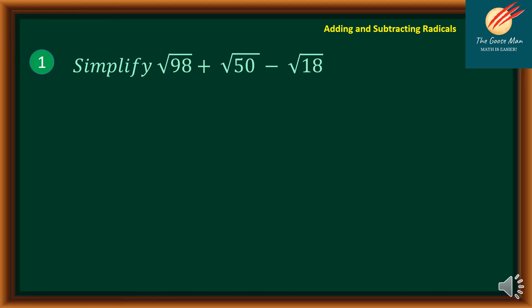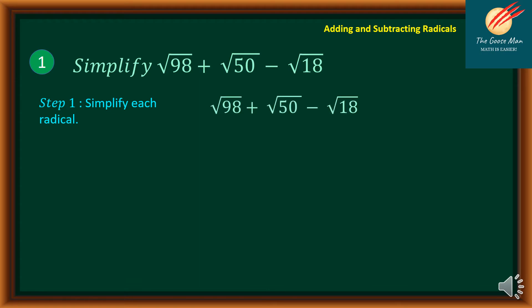Let's have problem number one. Simplify: square root of 98 plus square root of 50 minus square root of 18. The first thing we will do is simplify each radical. So the square root of 98 plus square root of 50 minus square root of 18 — we look for the factors of 98 that include a perfect square. So we have 49 times 2.